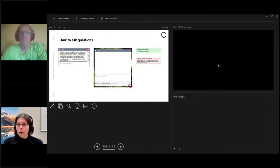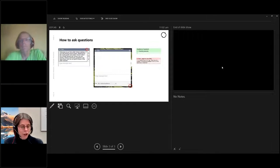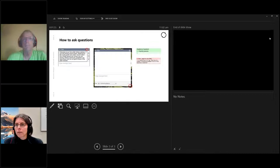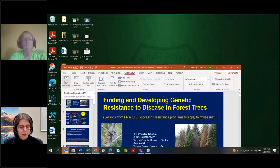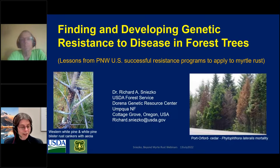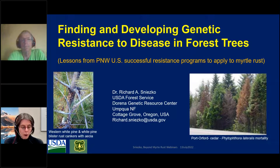A superb presentation this morning. So now I'm going to formally introduce him — Richard Nesco, a geneticist at the Dorena Genetic Resource Centre with the USDA Forest Service. Richard has been working in resistance breeding for several decades and has developed resistance programs for several species faced with non-native pathogens. It's fantastic to have him here today in the Myrtle Rust webinar series, all the way from the US. Feel free to get underway.